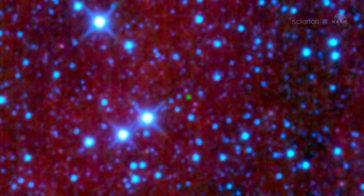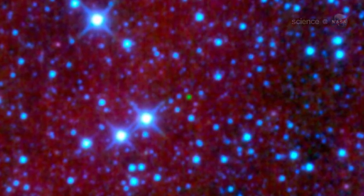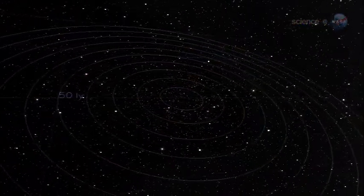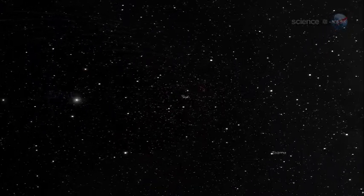Without fusion to keep them going, brown dwarfs cool and fade with time until what little light they do emit is at infrared wavelengths—perfect targets for a telescope like WISE. WISE scanned the entire sky for these and other objects and was able to spot their feeble light with its highly sensitive infrared vision, says William Danchey, WISE program scientist at NASA headquarters in Washington, D.C.